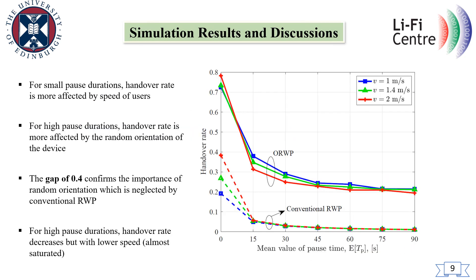In this slide, the performance of the extended orientation-based random waypoint model is compared with the conventional random waypoint where the orientation is neglected. Handover rate has been considered as the performance metric. From these results, it can be seen that for small pause durations, handover rate is more affected by the speed of users. For high pause durations, handover rate is more affected by the orientation of the device. A gap of 0.4 confirms the importance of random orientation which is neglected by the conventional random waypoint model. For high pause durations, handover rate decreases but with lower speed — it's almost saturated.